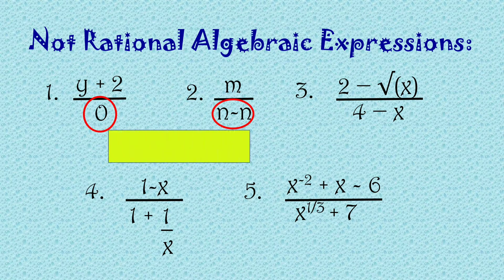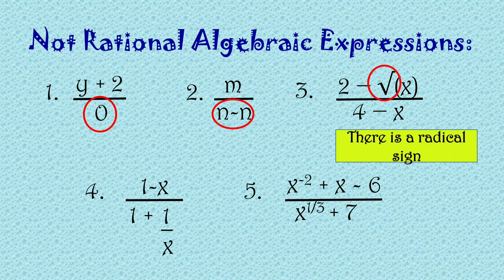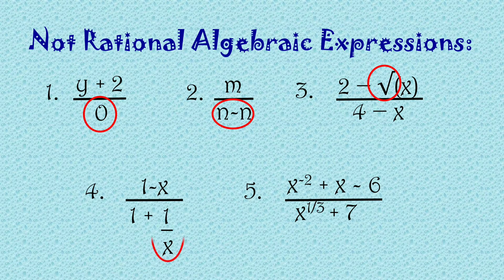So yung number 1 and 2, denominator is 0, so hindi na sya RAE. Yung number 3, kung napapansin nyo meron tayong radical sign — there is a radical sign. So pag may radical sign, di ba hindi na sya polynomials? Kaya hindi na sya RAE kasi pag sinabi nating RAE, ratio of two polynomials e. Dahil ang ating numerator dito may radical sign, meaning hindi na po sya RAE.